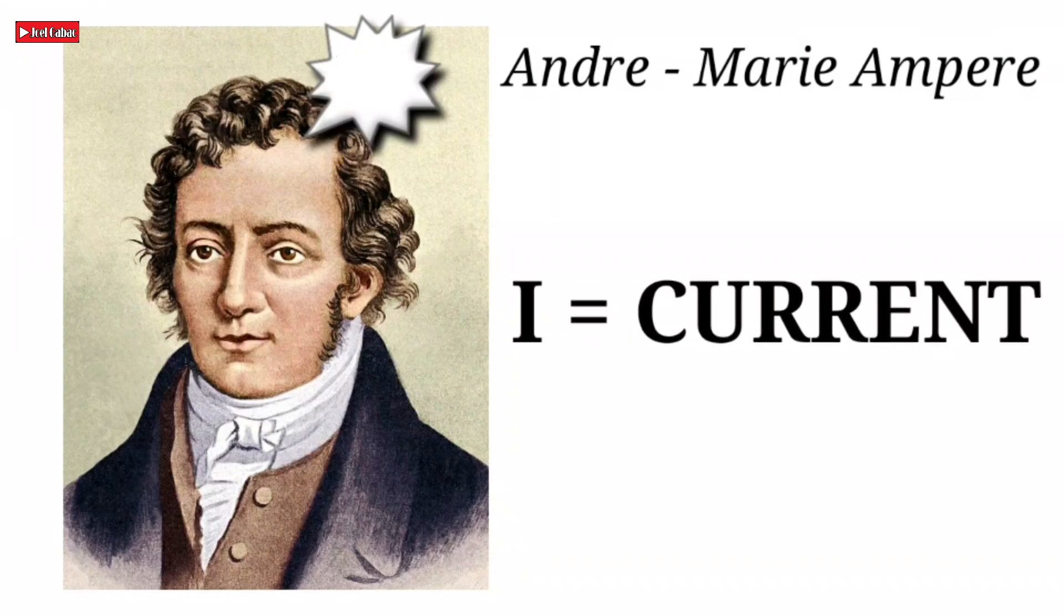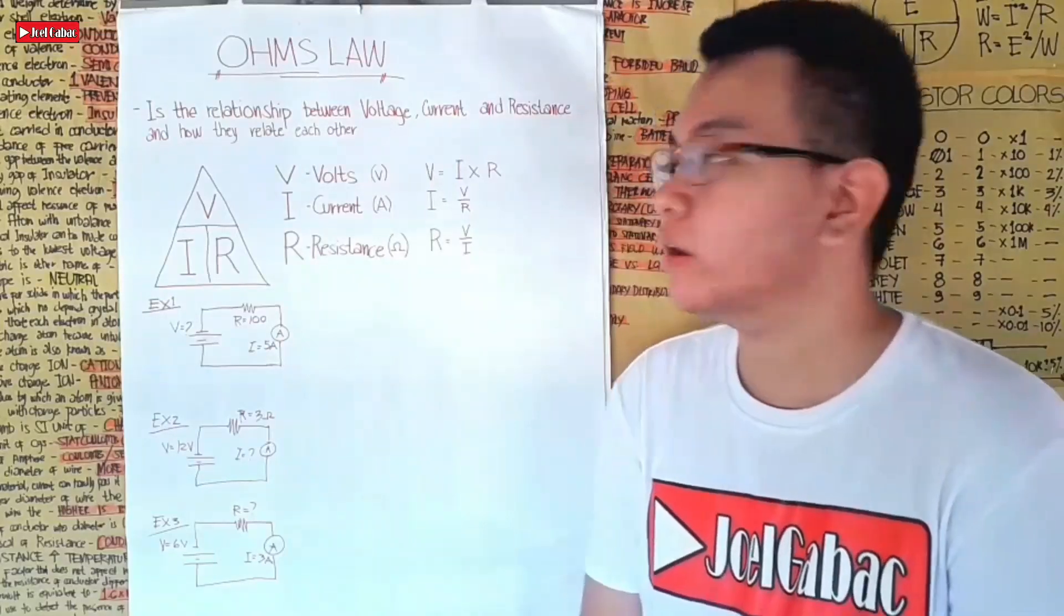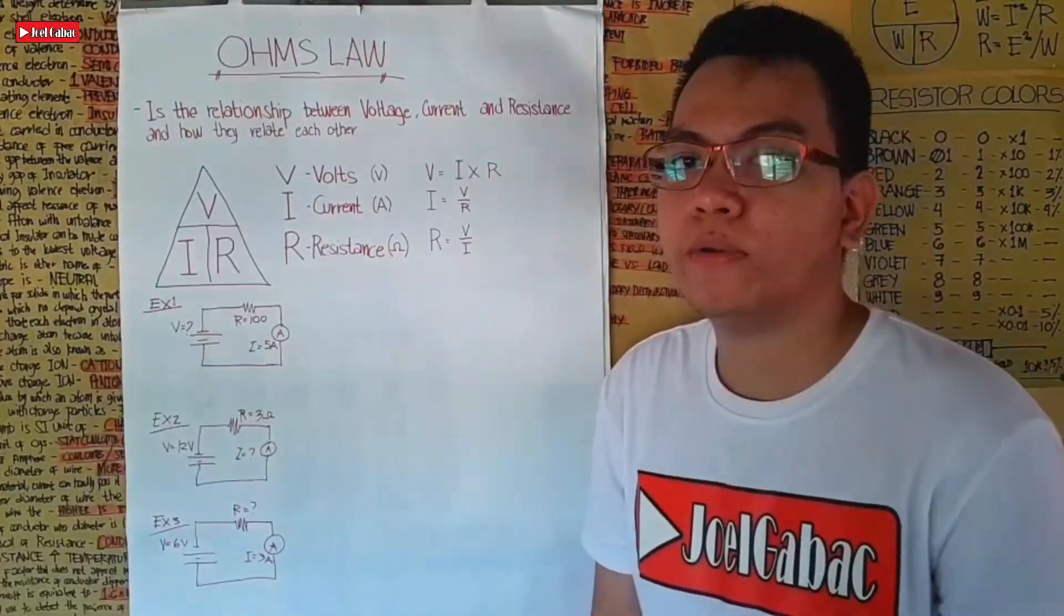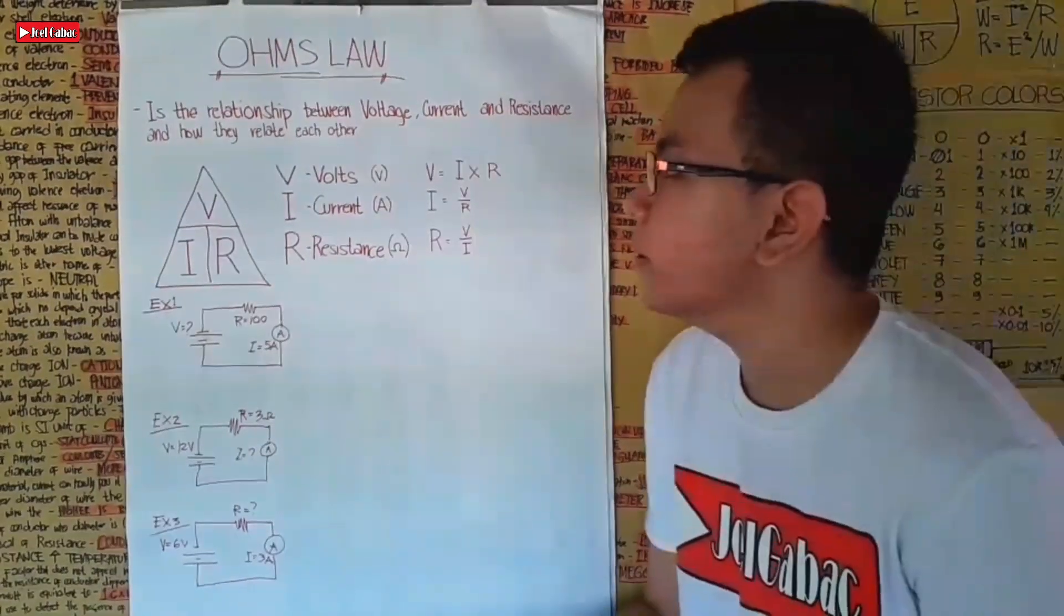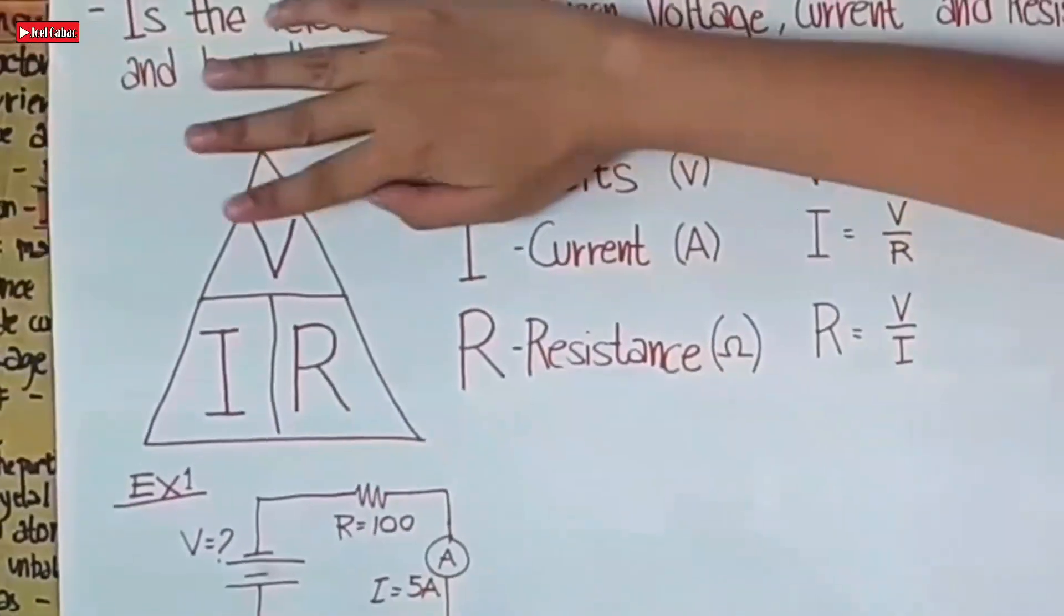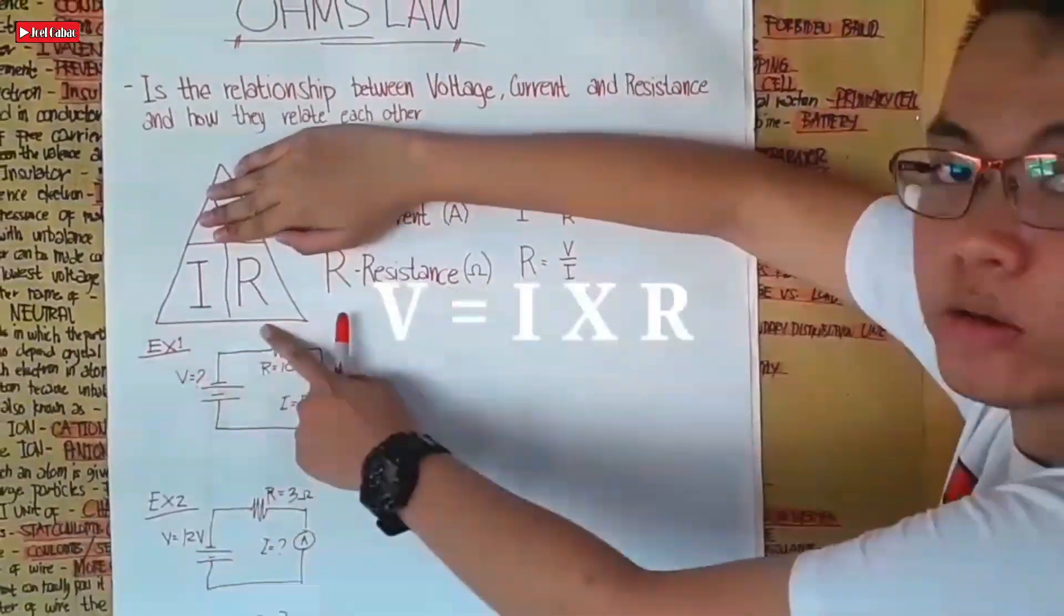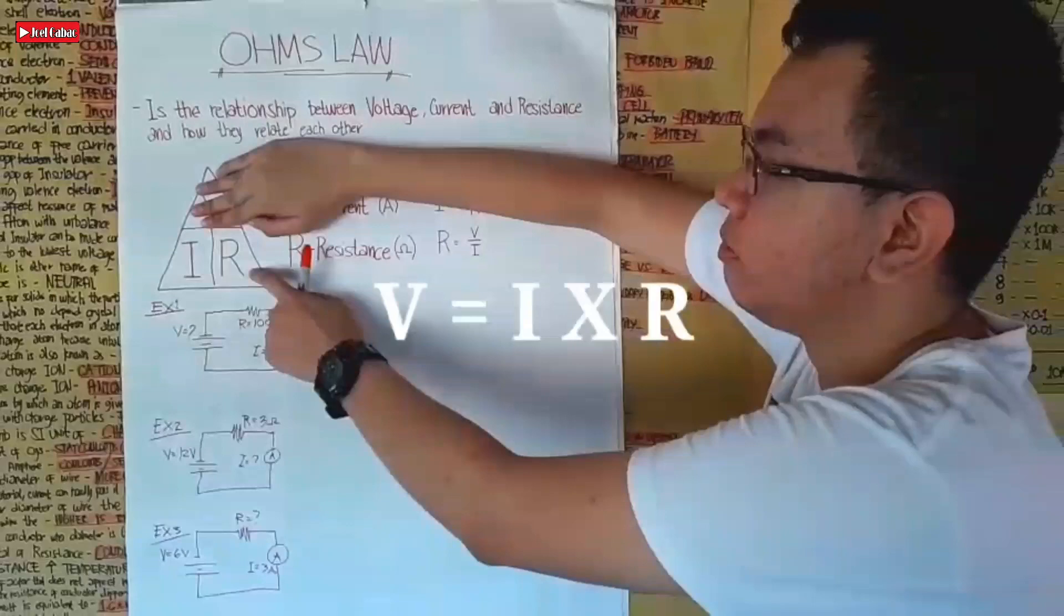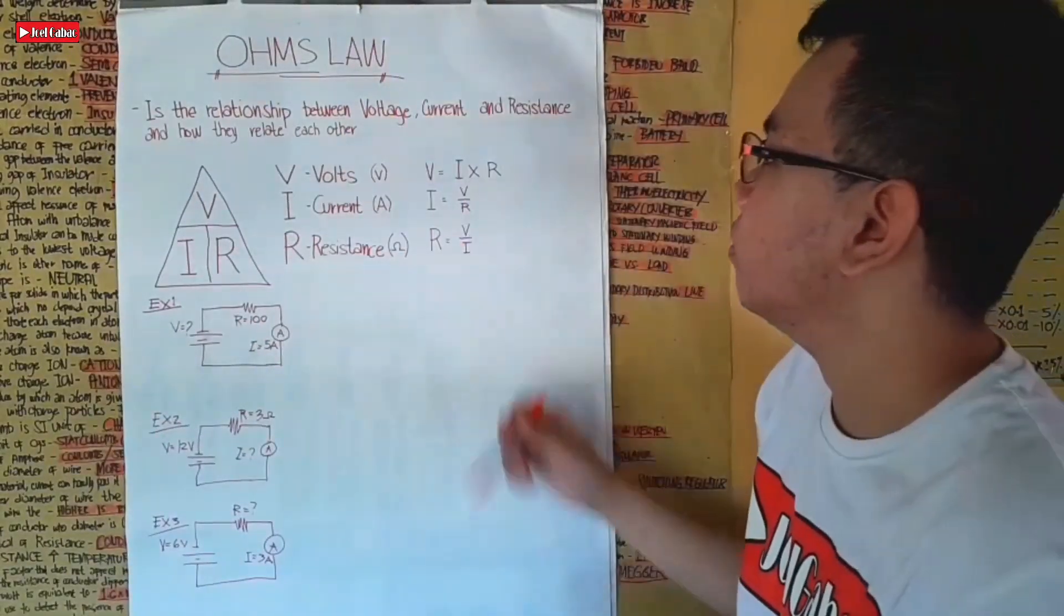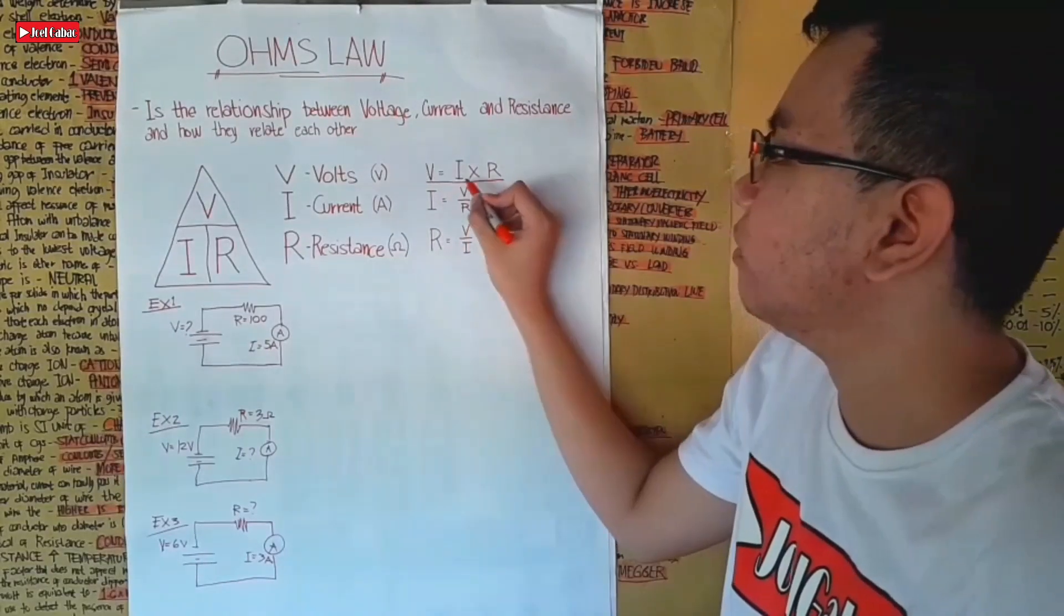So what is the interpretation of the Ohm's Law triangle? If you cover V or volts, it's like this: V is equal to I times R. It's that simple.